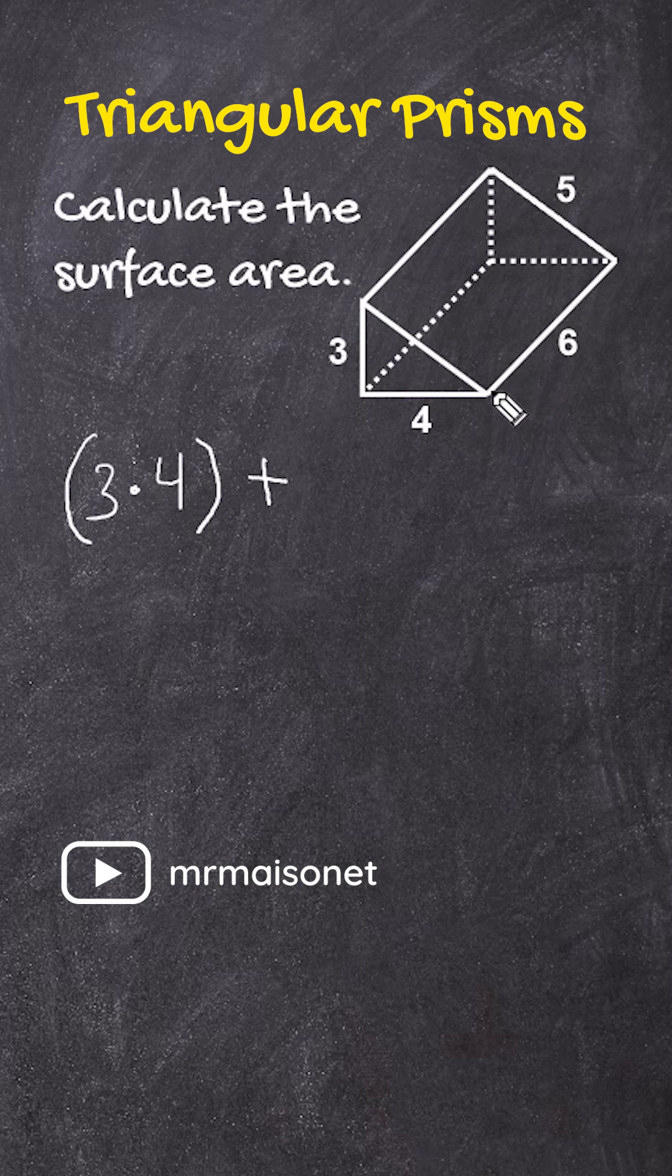Now, to do that, what we do is we take the perimeter of a single triangle. In this case, it's going to be 3 plus 4 plus 5, so the distance around this triangle is going to be 12.